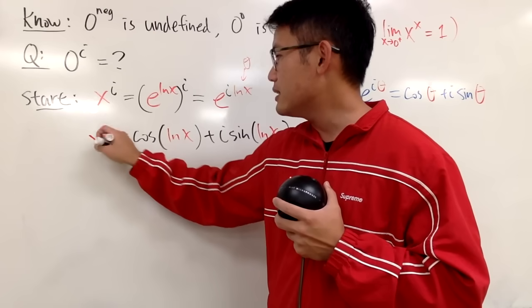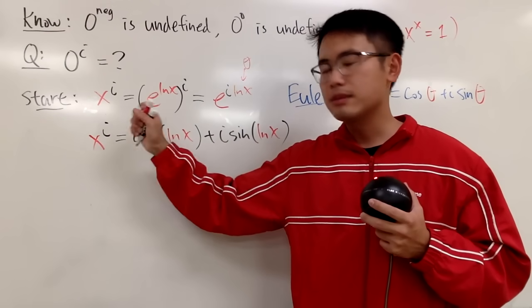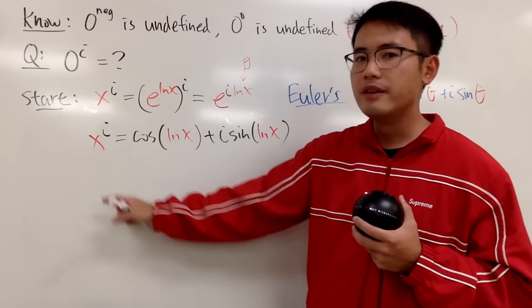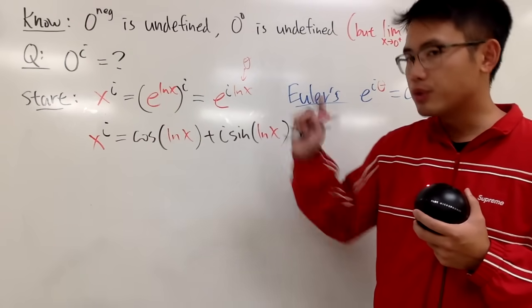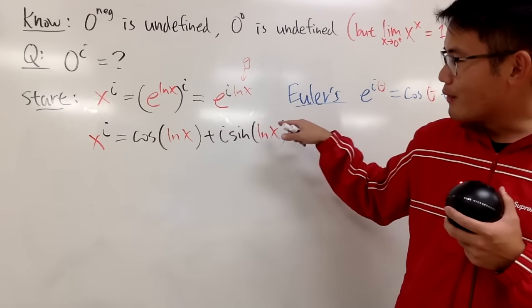So, this is how we take care of a real number to the i's power. If you have 2 to the i's power like this, then you will get cosine of ln(2), and then plus i times sine of ln(2).